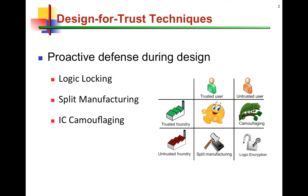Design for Trust is mainly about being proactive during the design stage. What can a designer do during the design of their chip to make it resilient against all the threats that are out there? The threats being counterfeiting, Trojans, IC piracy, reverse engineering, etc.